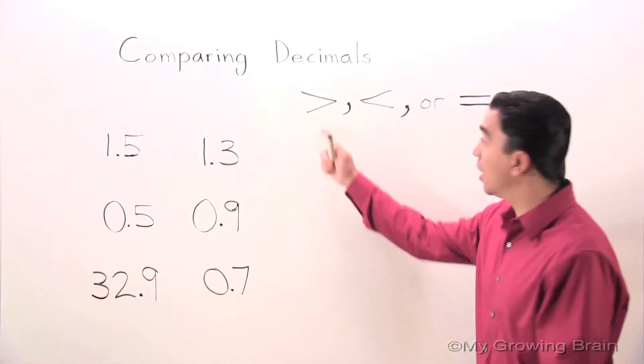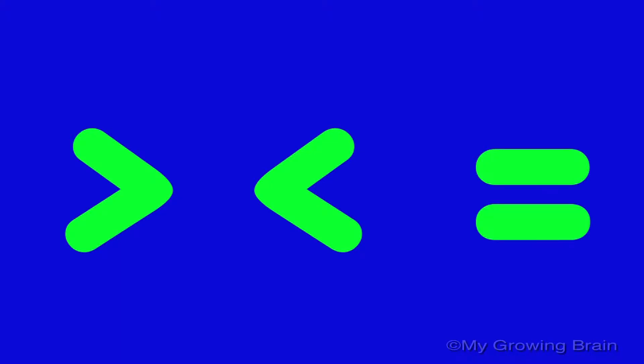First thing we're going to do is review these three symbols because these three symbols are very important when we compare. The greater than symbol, the less than symbol, and the equal to symbol.